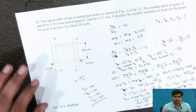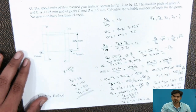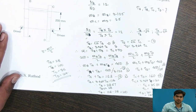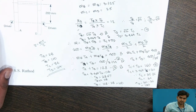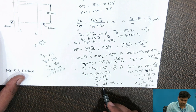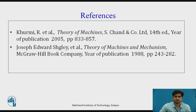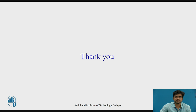This is how we solve the equations to find the number of teeth. These are the calculations for TD and TB, and these are my references. Thank you.